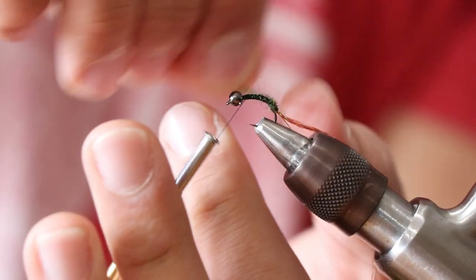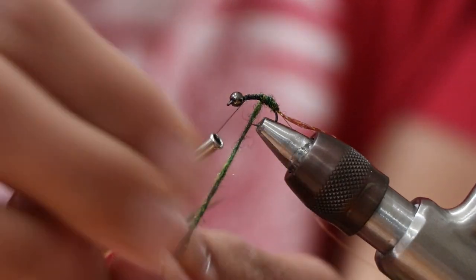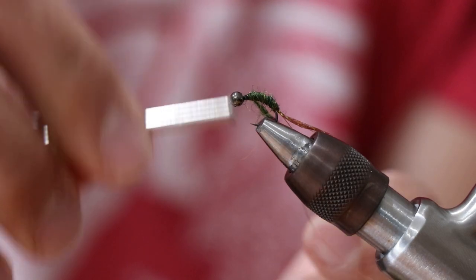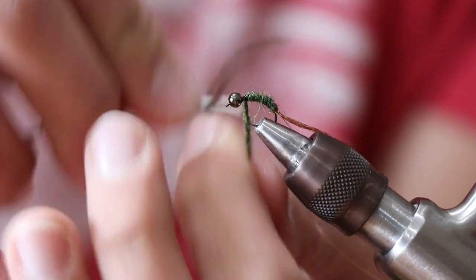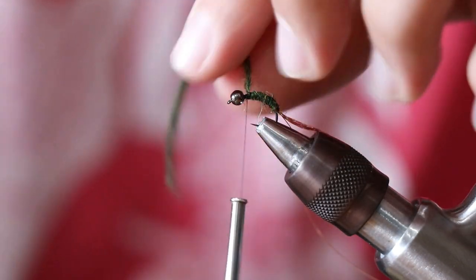So I'm going to wrap this dirty bug yarn right around the body. Yet again, one of the reasons why this is kind of one of my go-to guide caddis patterns is because it's very simple and quick to tie, so if I can crank out a lot of these in a short period of time, the better.